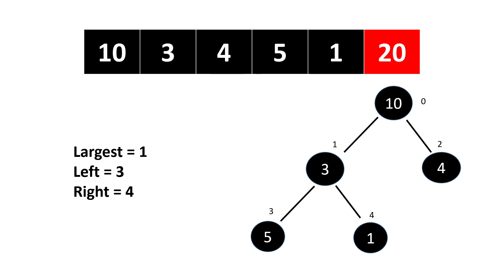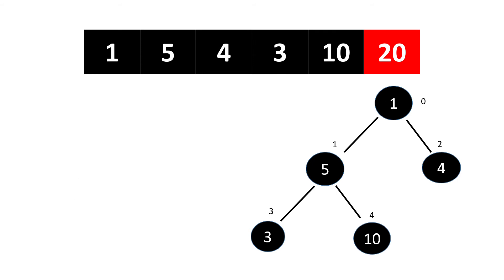The largest pointer is now at index one. We perform max heapify again: left becomes index three and right becomes index four. We check if the element at index three is greater than the element at index one — yes, five is greater than three — so largest becomes index three. We check index four against index three — no — so we swap between index three and index one, and our max heap is generated.